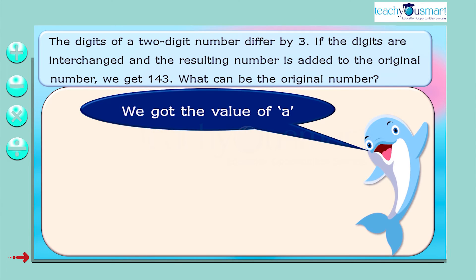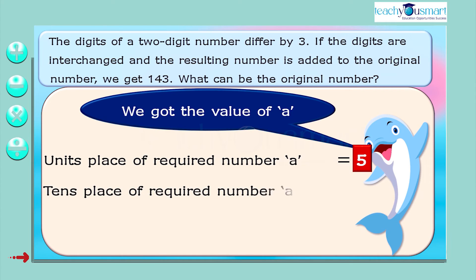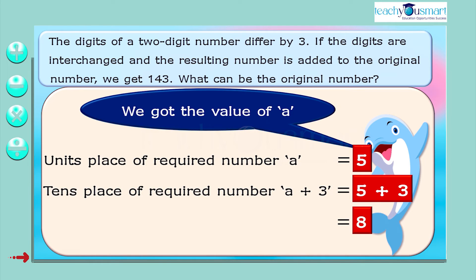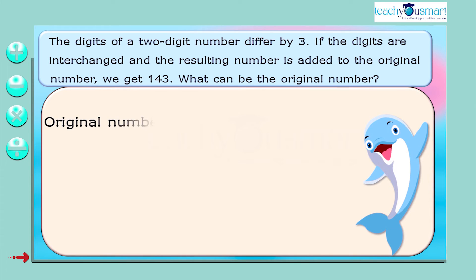Now we got the value of A. That is, A equals 5, which is the unit's place of the required number, and the tens place is A plus 3, which equals 5 plus 3, equals 8. So the original number is 85.